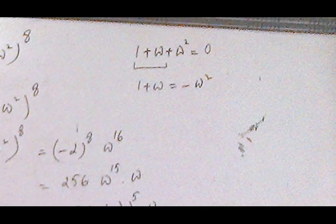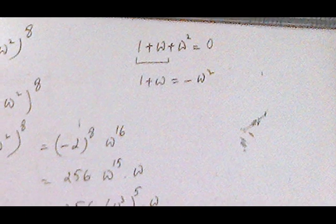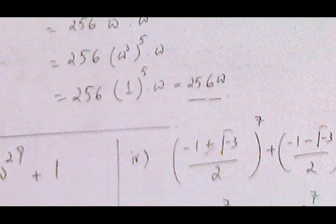Therefore we have ω² + ω which equals -1 from the property 1 + ω + ω² = 0. So (ω²)⁷ + ω⁷ = -1.